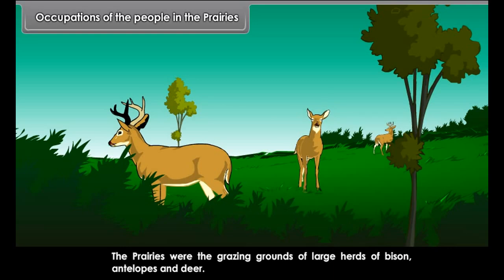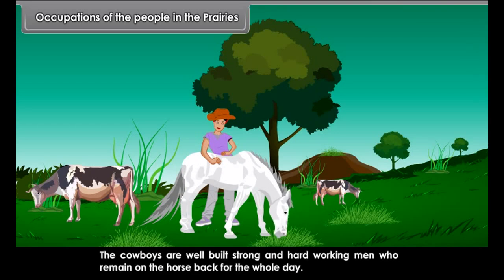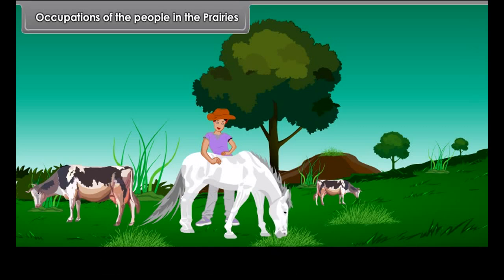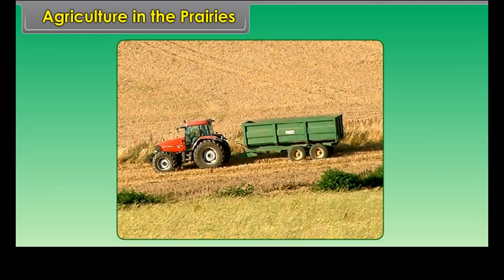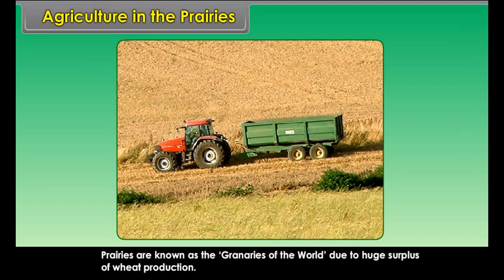Occupations of the people in the Prairies: There are two major occupations — cattle rearing and farming. The Prairies were the grazing grounds of large herds of bison, antelopes and deer. The cattle are allowed to graze freely in the open plains under the supervision of cowboys, who are well-built, strong and hard-working men who remain on horseback for the whole day. Cattle live in large cattle farms called ranches.